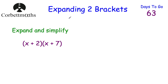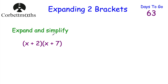Today we're going to be looking at expanding two brackets. Here we've got an example: expand and simplify (x + 2)(x + 7). What this means is we've got x plus 2 lots of x plus 7. So if we do x lots of (x + 7), and 2 lots of (x + 7), we can add it all up and that'll be our answer.